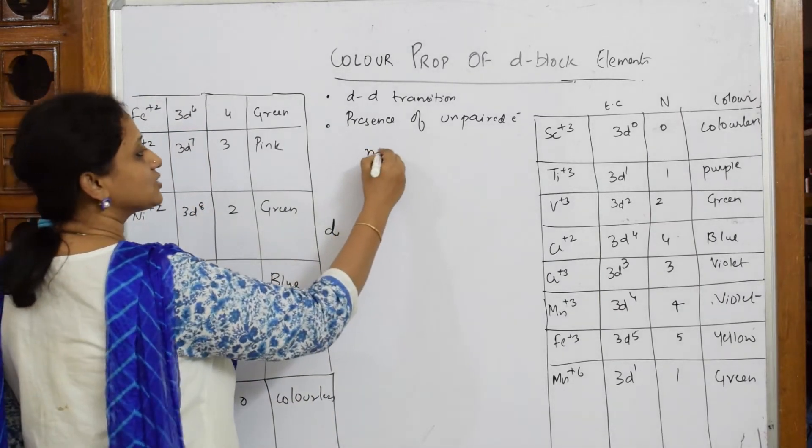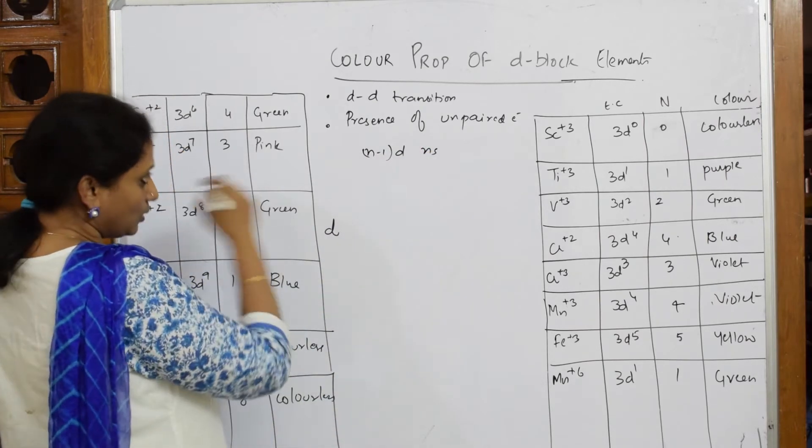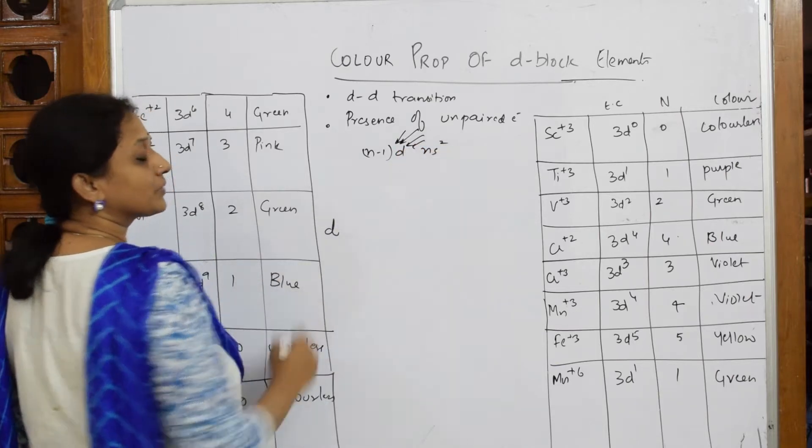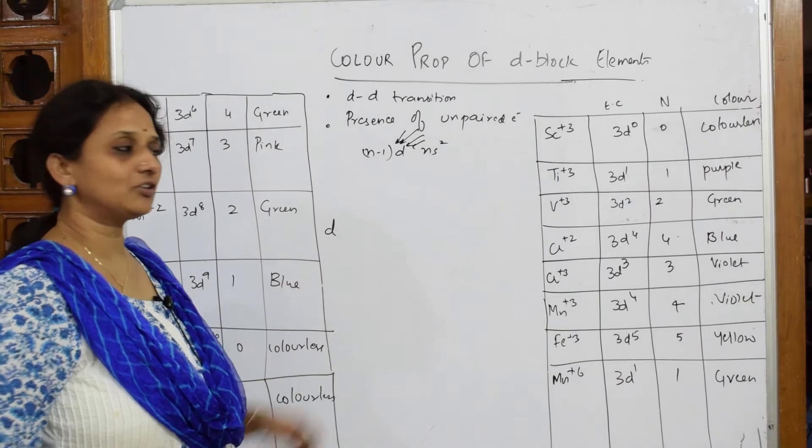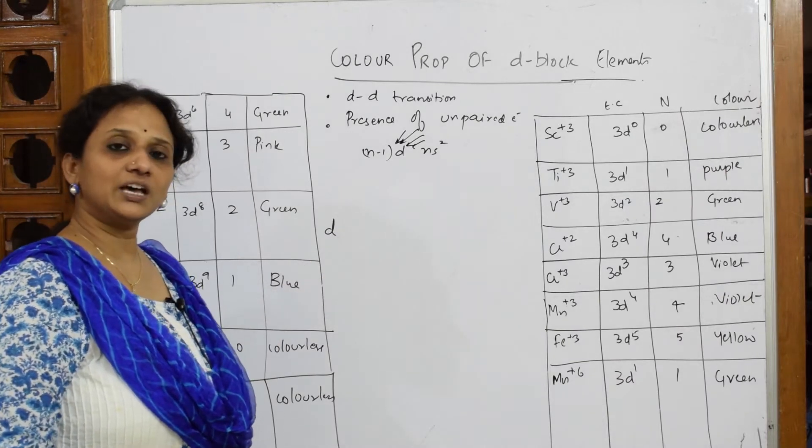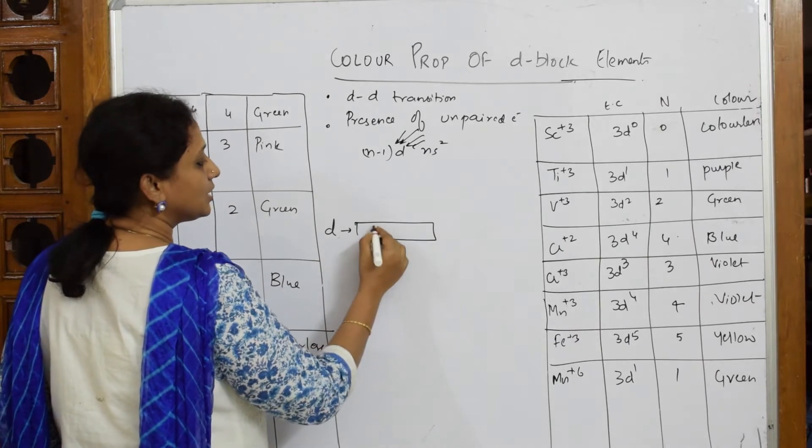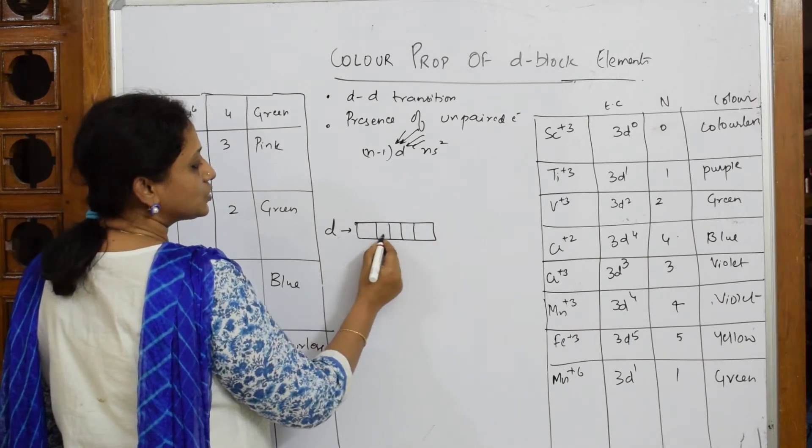When the electron is entering the d sub shell, your d orbitals - these d orbitals have five orbitals: one, two, three, four, five. The first three are called t2g center and the next two are called eg center.